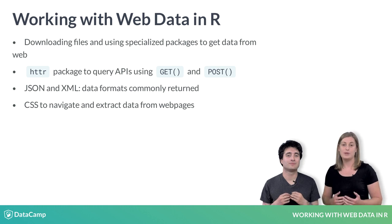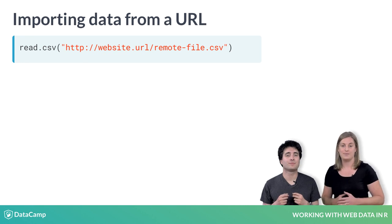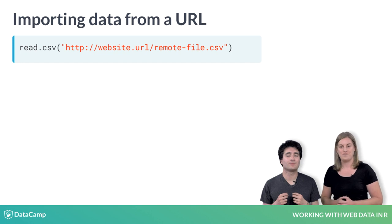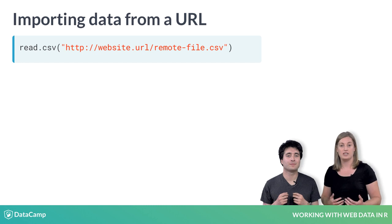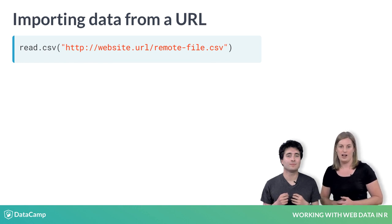First, let's begin with the easy case. Many functions in BaseR that are used for importing data accept a URL, so you can directly import the data from its location on the internet. For example, to retrieve a CSV file that you found on the internet, you can still use read.csv. The only change to your code is that, rather than passing in a path to a local file, you pass in a URL.